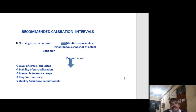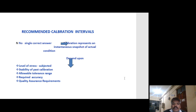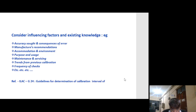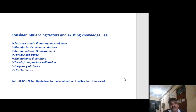Calibration represents an instantaneous snapshot of the actual condition. The calibration interval depends on: the level of stress subjected, stability of past calibration, allowable tolerance range, required accuracy, quality assurance requirements, and considered influencing factors and existing knowledge. Examples of influencing factors include: accuracy chart and consequences of error, manufacturer's recommendation, accommodation and environment, purpose and usage, maintenance and servicing, and trends from previous calibration. Calibration frequency check guidelines are used for determination of calibration interval of measuring instruments.